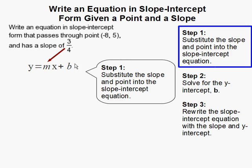I'm going to substitute 3 fourths into m and m represents the slope. Then I'm going to substitute the point given negative 8 comma 5 into our equation as well. Negative 8 represents the x and 5 represents the y.